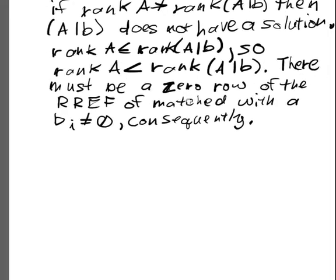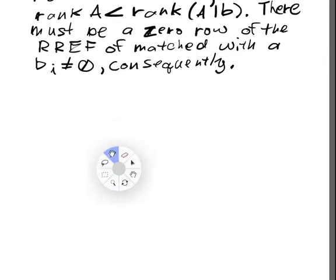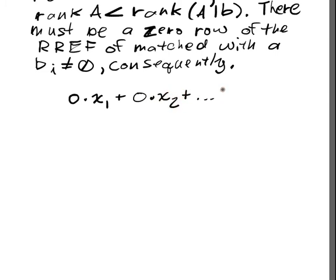But what does that mean? If I have a zero row matched with something that's not zero, then I have zero times x1 plus zero times x2 plus all the way to zero times xn is equal to BI. But this side is all zero. So BI must be equal to zero. This cannot happen. So I have that BI is equal to zero and BI does not equal to zero.